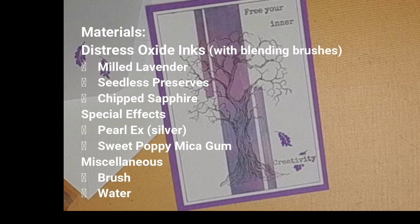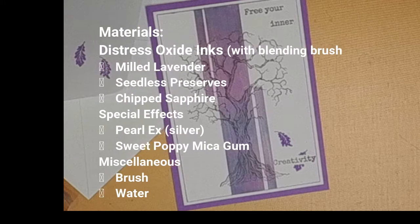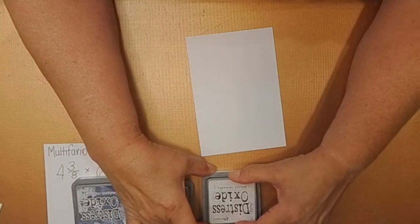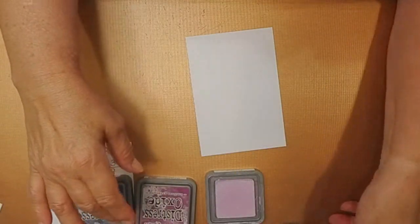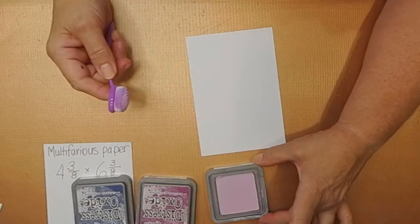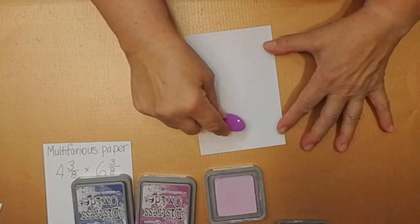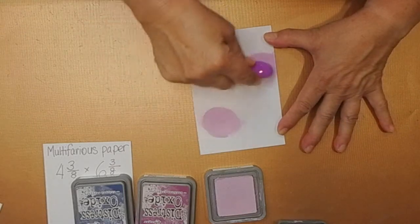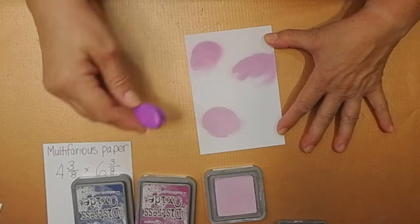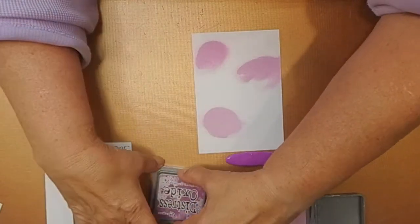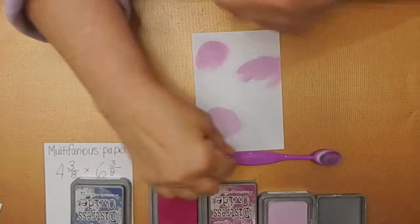I'm going to start with distress oxides milled lavender and I'm going to apply that to a multifarious sheet of paper, four and three-eighths by six and three-eighths inches. I'm not particular in any particular way of putting it down, I'm just putting blobs here and there with my first two colors.